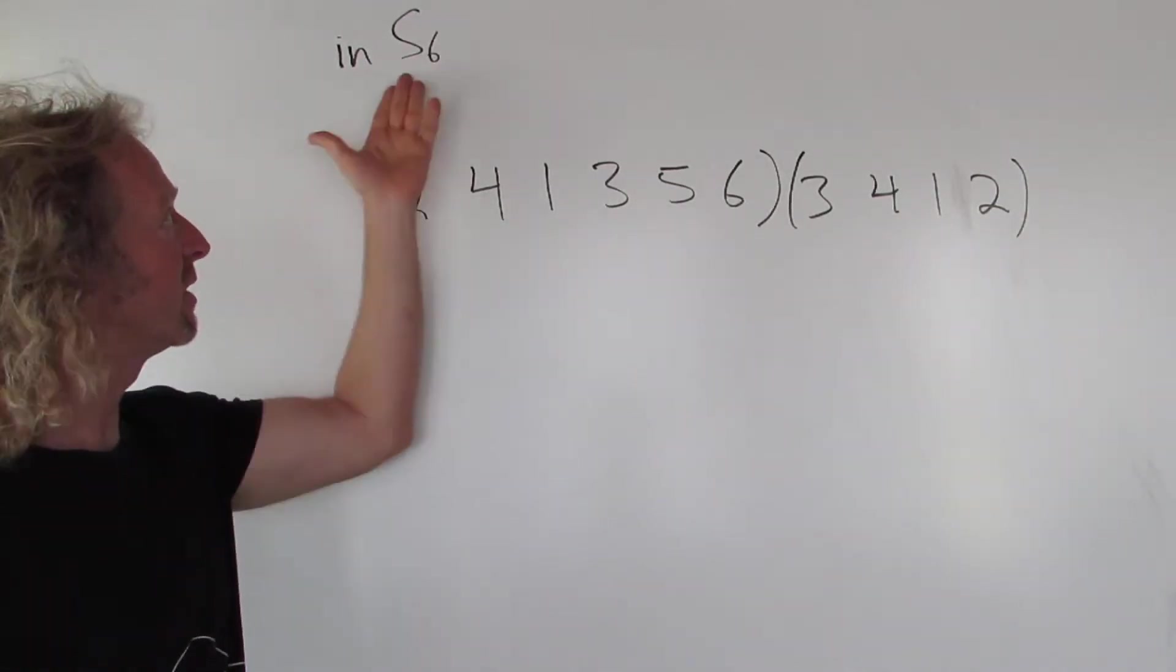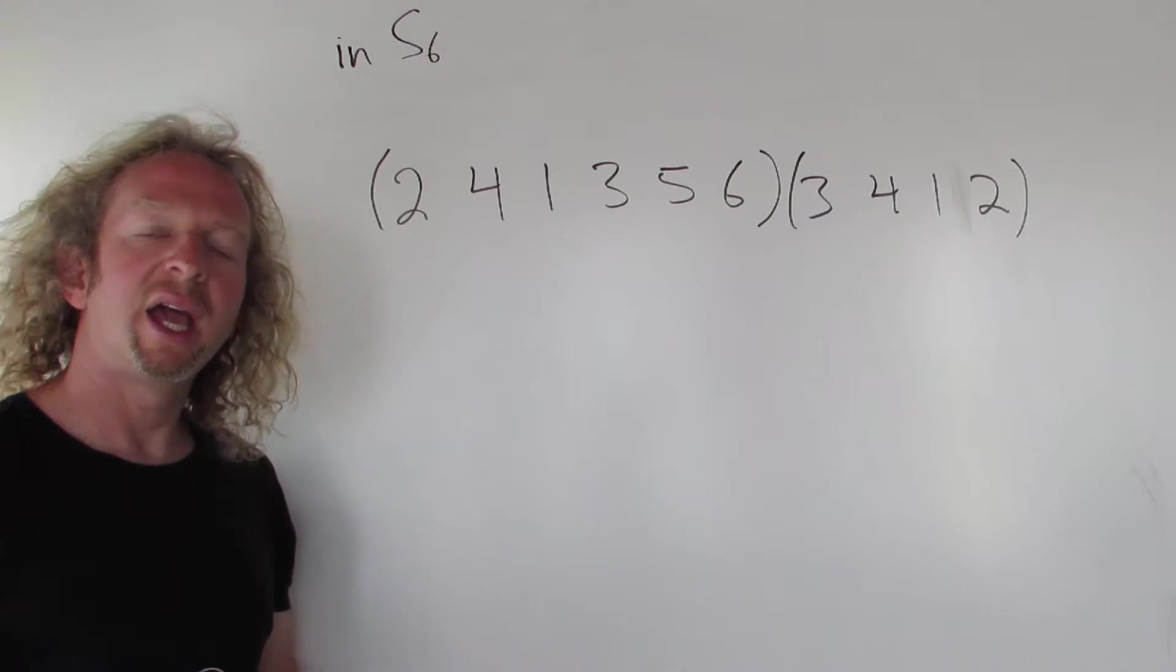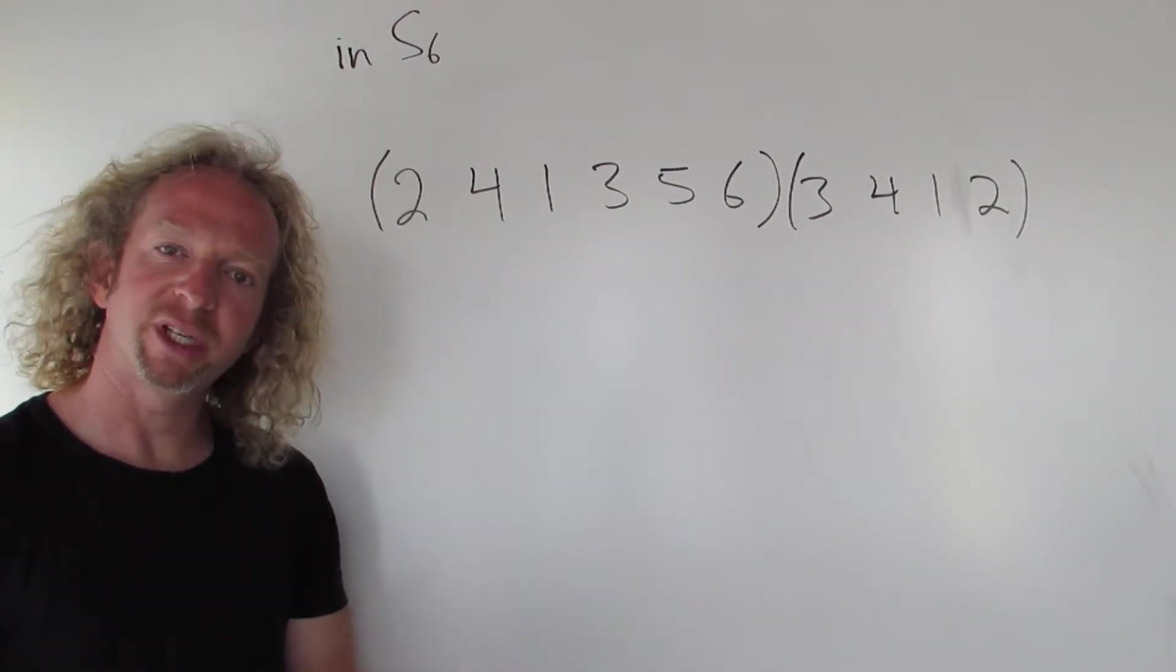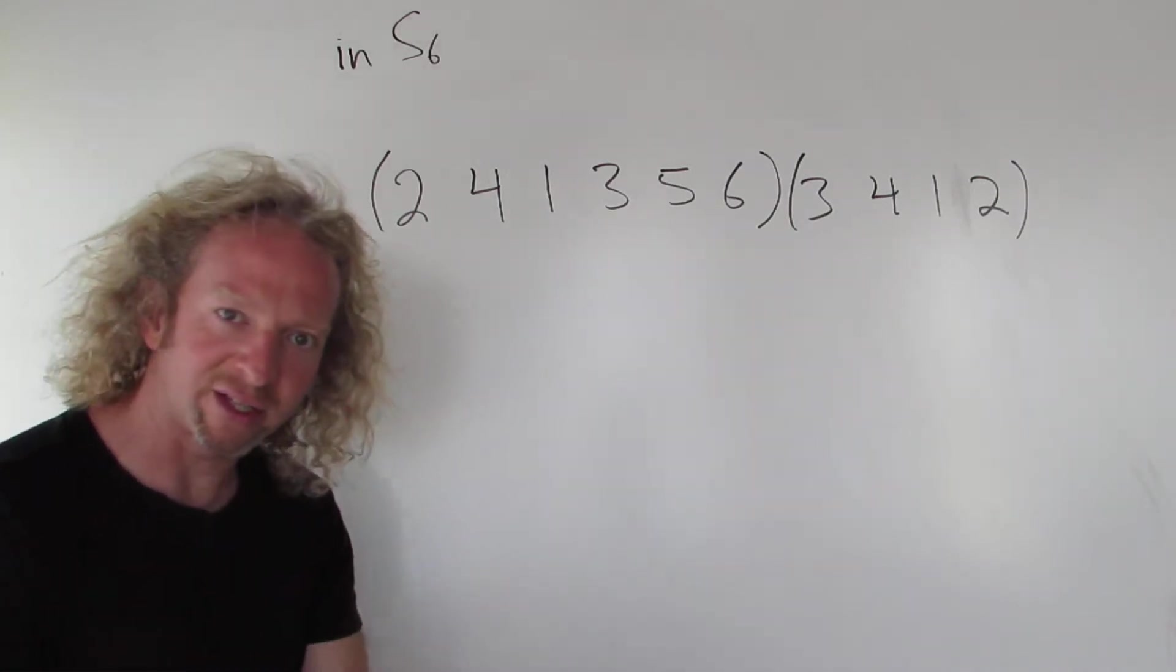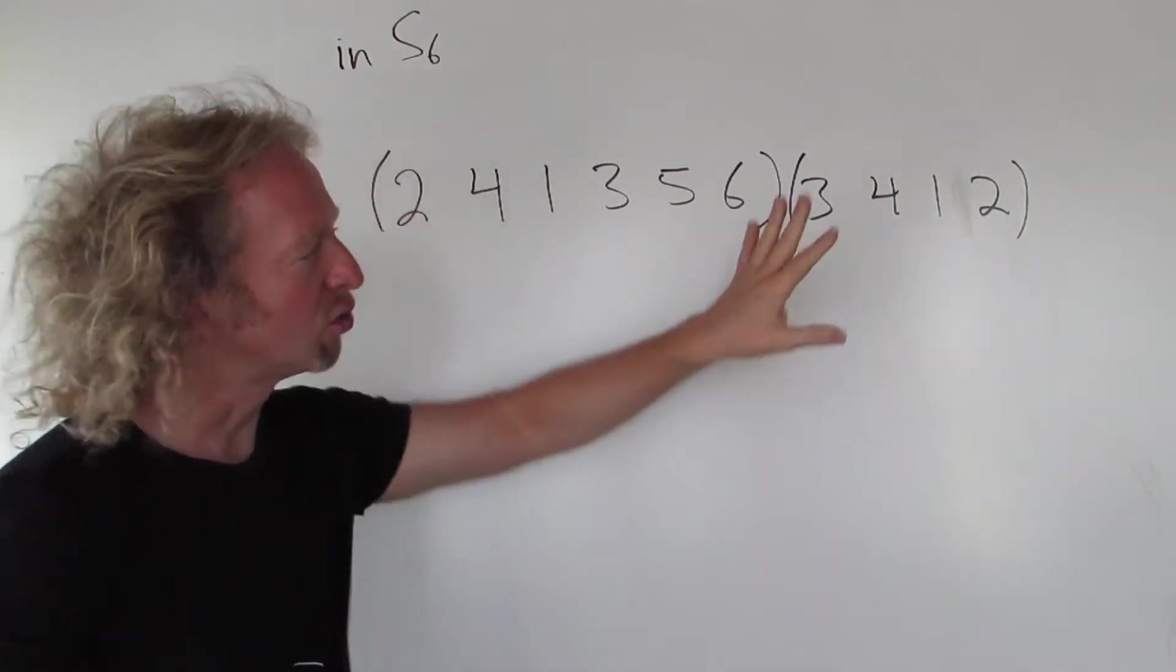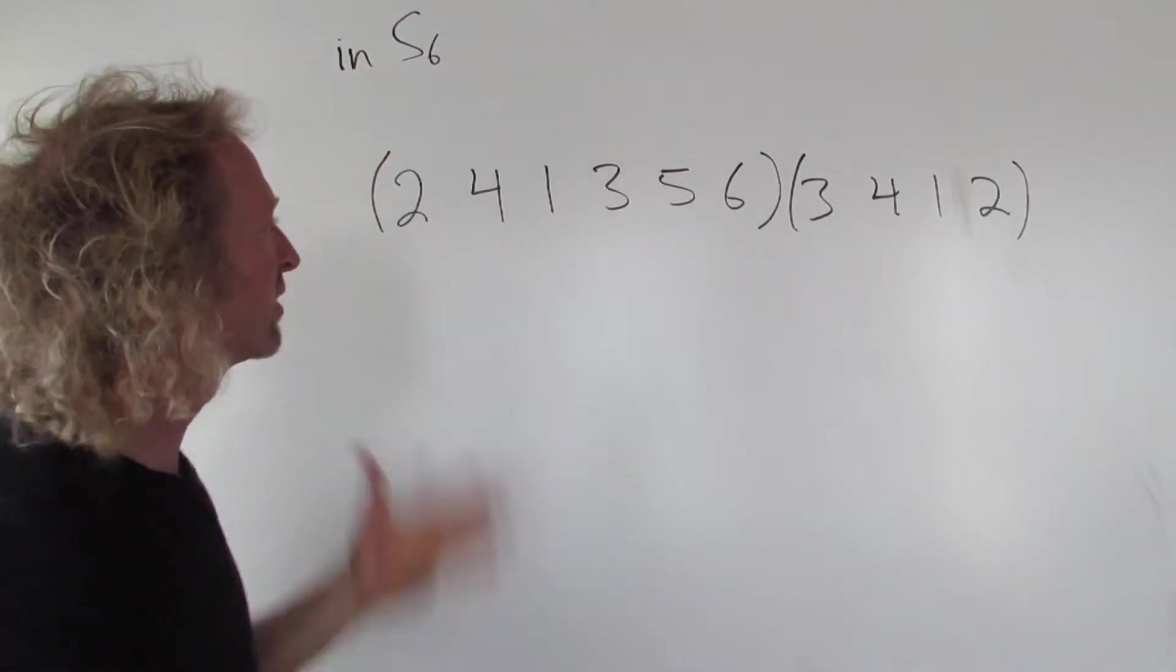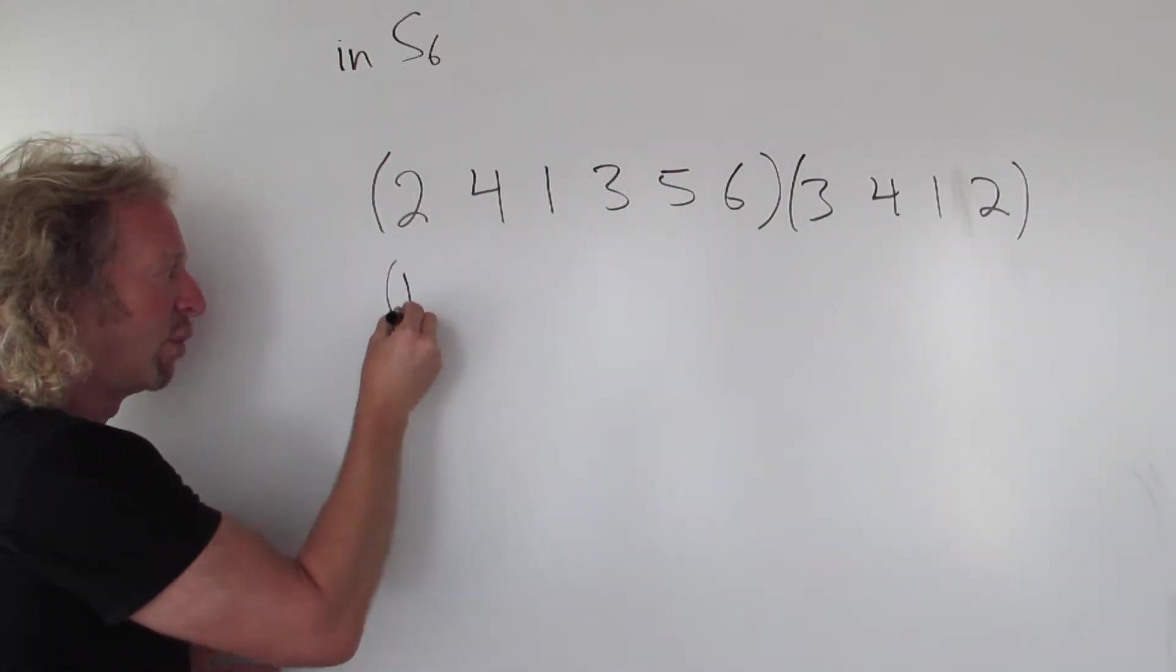In this video, we have two elements in the symmetric group of degree six, and we're going to multiply them. The most important thing to remember is that the multiplication takes place right to left. So you always start on the right. You can pick any number you want, one through six. Let's start with the number one.